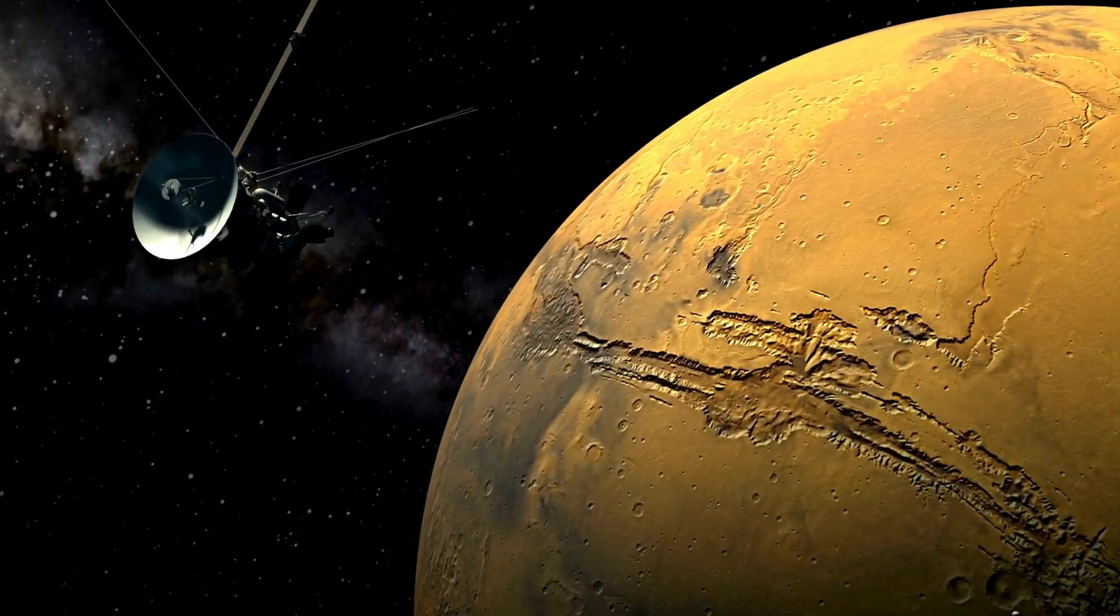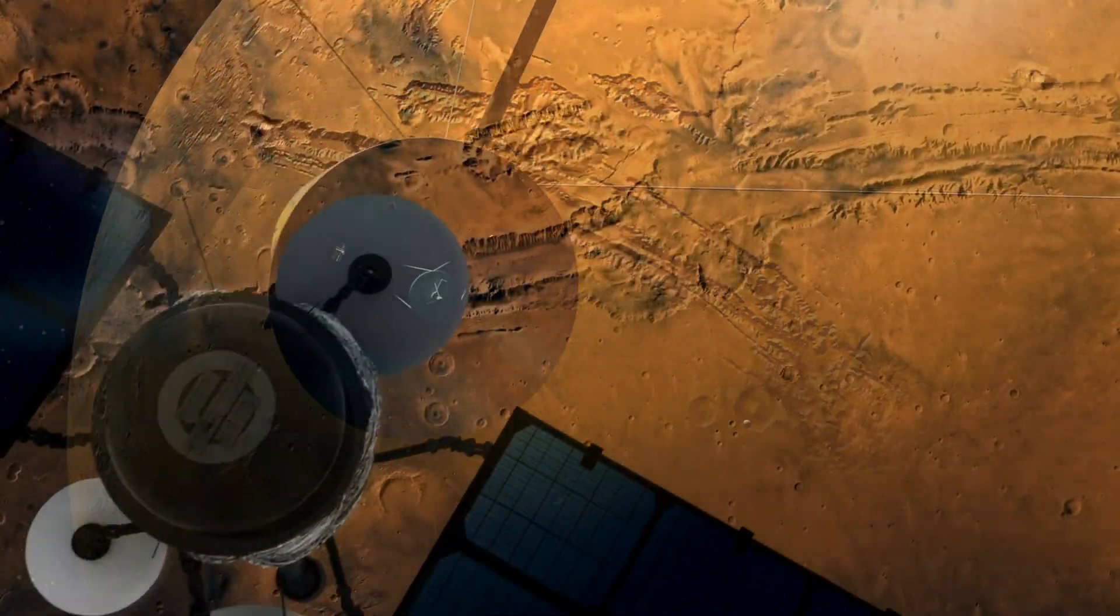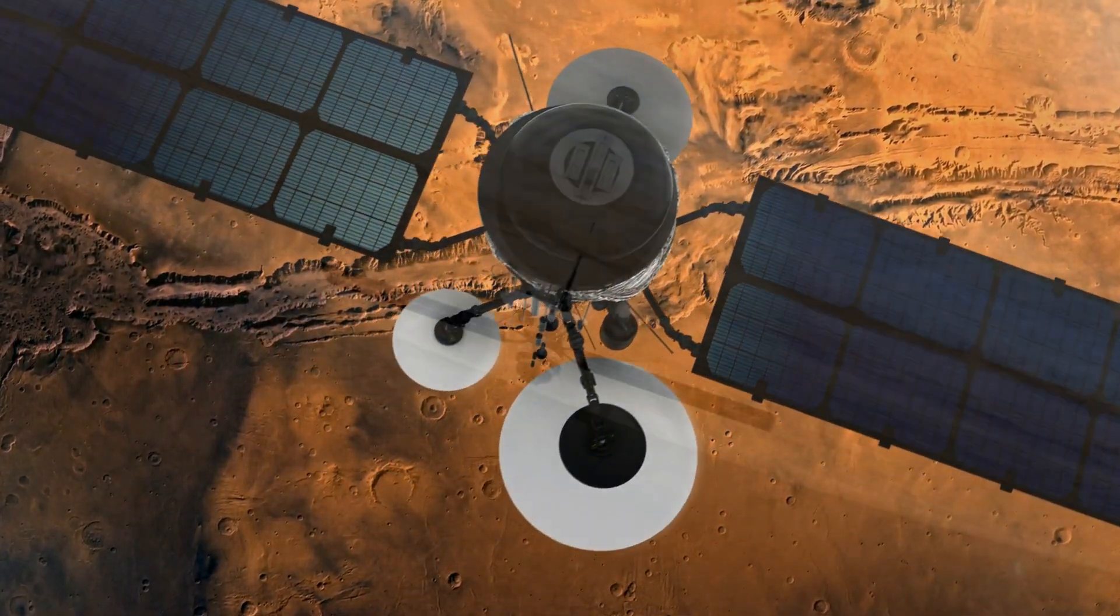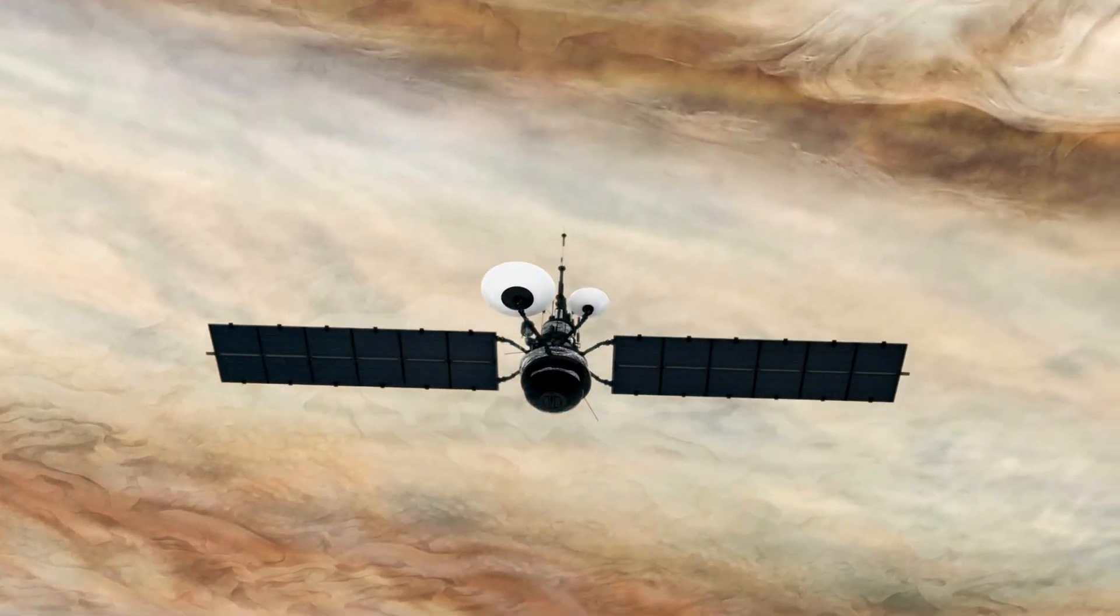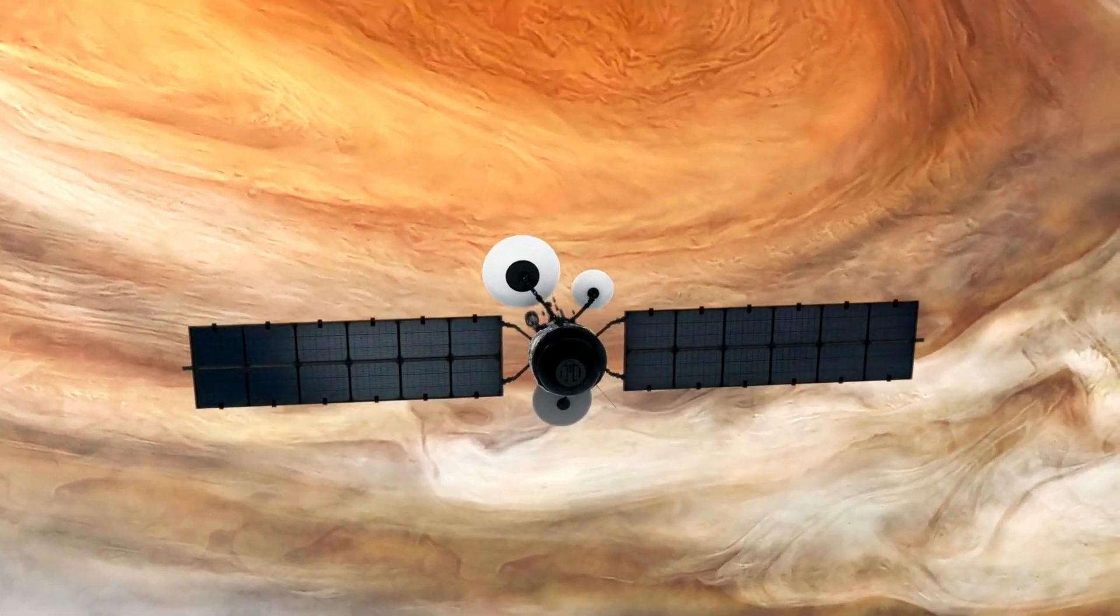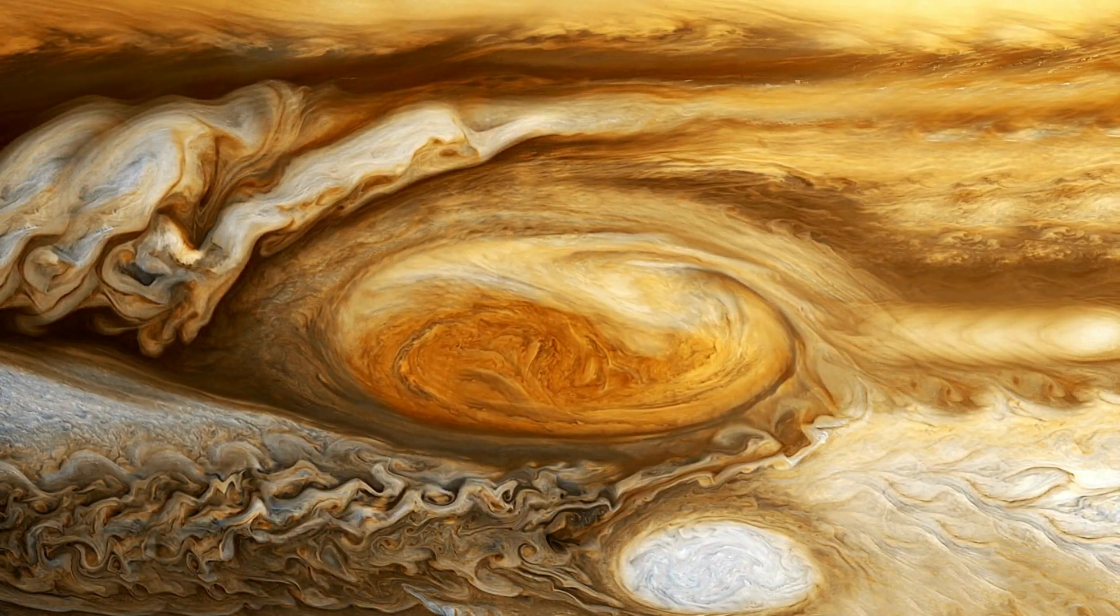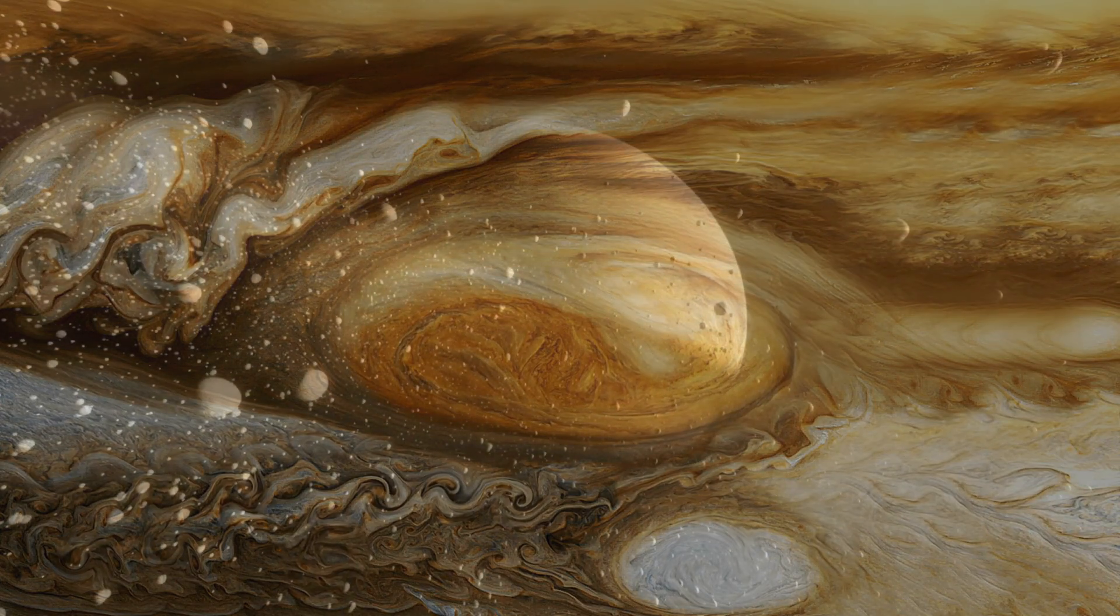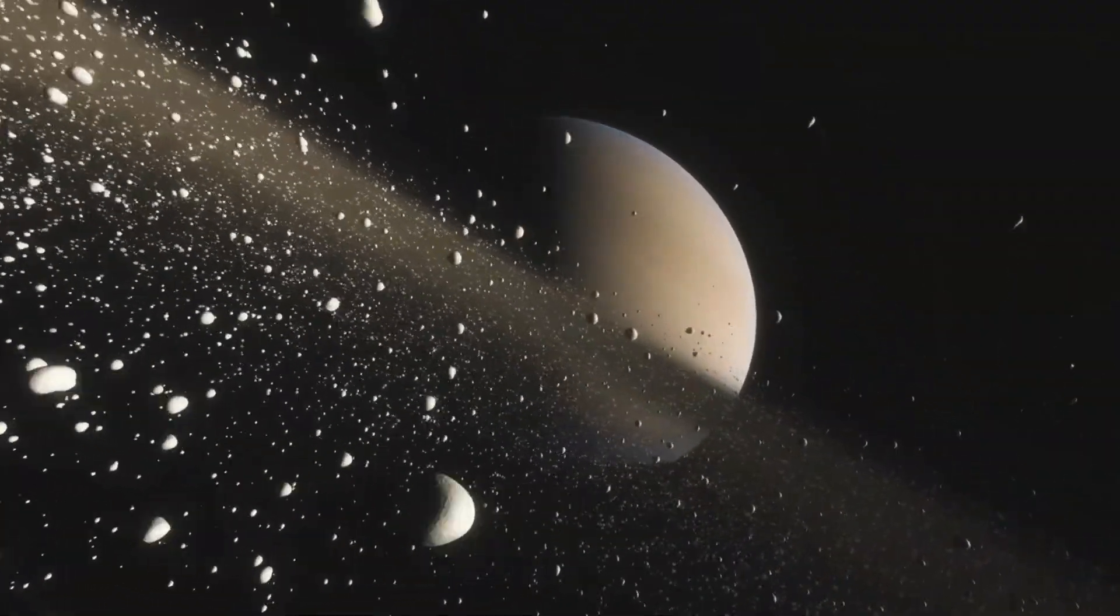Humanity has sent robotic explorers to uncover the secrets of our planetary neighbors. Perseverance searches for signs of ancient life on Mars, while Juno peers into Jupiter's violent storms. Each mission reminds us, we are just beginning to understand our own celestial neighborhood.